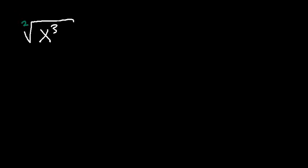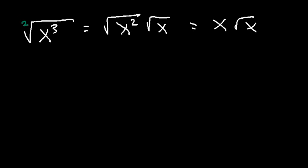Now let's add variables. How would you simplify the square root of x to the third? You can split it as the square root of x squared times the square root of x. The square root of x squared is x, so the answer is x root x. Depending on your algebra course, some teachers may want an absolute value when you have an even index number and an odd exponent result.